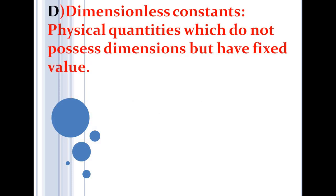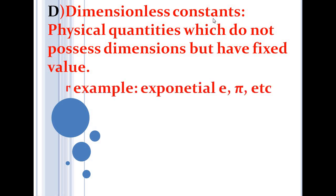The fourth category is dimensionless constants. Such physical quantities have no dimension and have constant values. For example, pure numbers like e (exponential) are dimensionless constants.